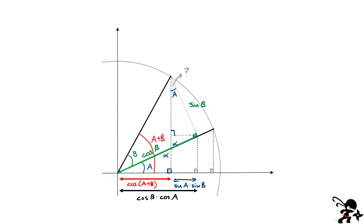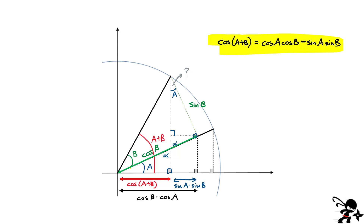Now you can put everything together. The total length we're looking for is the red one: cosine of A plus B. From the dimensions, cosine of A plus B must equal the black line — with length cosine of A times cosine of B — and then you subtract this segment. So you switch the sign, and the length of the blue segment is sine of A times sine of B. So we've proved one of the identities: the cosine of the sum of two angles equals this combination of cosine and sine functions.